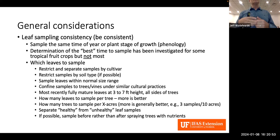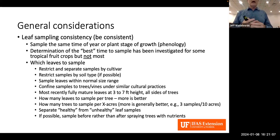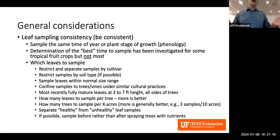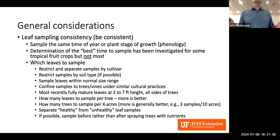If you decide to sample in June for a particular grove, try to set up a comparison over time and do it every single June. For most tropical fruit crops the best sampling time has not been determined. It's important to restrict and separate samples by cultivar — I wouldn't suggest mixing cultivars because that may confuse the results.